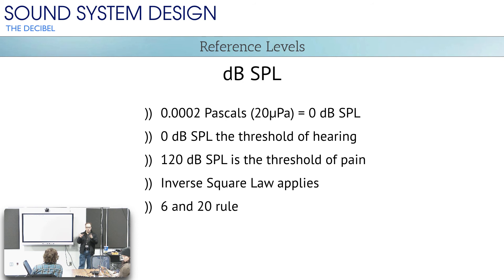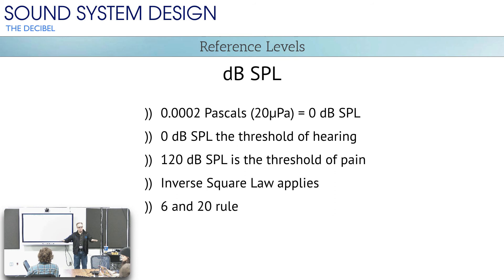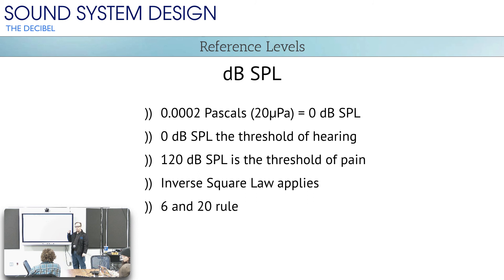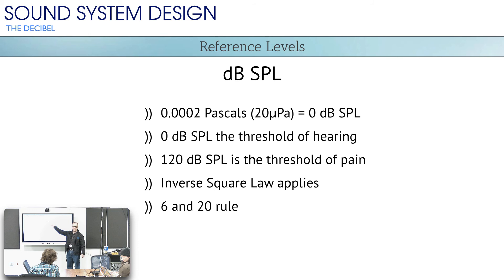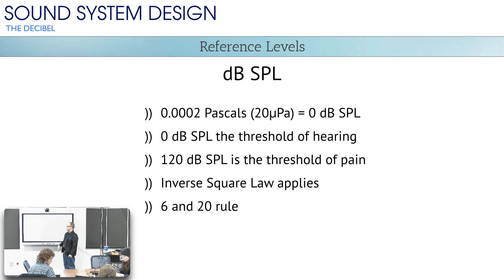If you want to be a professional sound person, you have to agree with the consensus that was already created before you were born. If you don't agree with it, you don't get to be a sound person. The way you know you're dealing with a reference level is if there are letters next to the dB. If you see 'dB SPL,' that means decibels in sound pressure level. They standardized that 20 micropascals equals 0 dB SPL — that is the standard. You have to agree with that or you don't get to do sound.